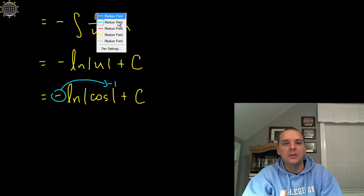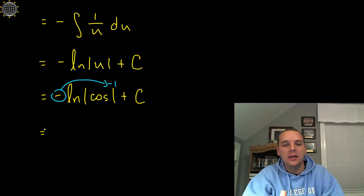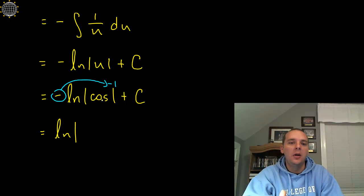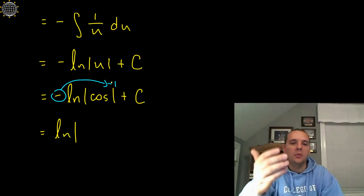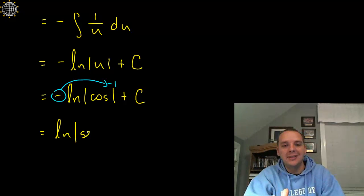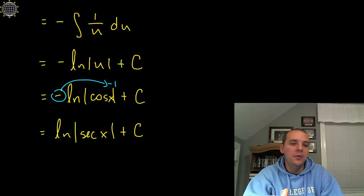And so we could actually rewrite this as the natural log of the absolute value of one over cosine, which would be secant of x, and I forgot my x, forgive me, secant of x plus C. And so by moving this negative up into the exponent, it goes away in front of the natural log function, looks a lot cleaner.